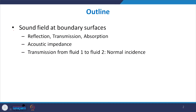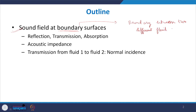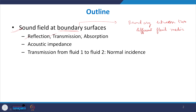The outline for this lecture is that we will discuss mainly the sound field at boundary surfaces — specifically the boundary between two different fluid media. We will cover what happens when a sound wave propagating in a homogeneous medium suddenly encounters an interface with a second fluid medium, and discuss terminologies like reflection, transmission, absorption, and impedance. Finally, we will do a case study of transmission from fluid 1 to fluid 2 in the case of normal incidence.